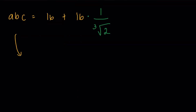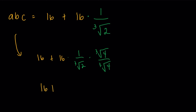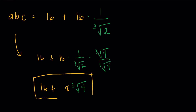Substituting cosine X equals 1 over cube root of 2 into ABC equals 16 plus 16 cosine X: we get 16 plus 16 times (1 over cube root of 2). Rationalizing by multiplying by cube root of 4 over cube root of 4: the denominator becomes cube root of 8 equals 2, so 16 over 2 gives 8 times cube root of 4. The final answer is 16 plus 8 times the cube root of 4. Hopefully you learned something new from this video — see you in the next one!